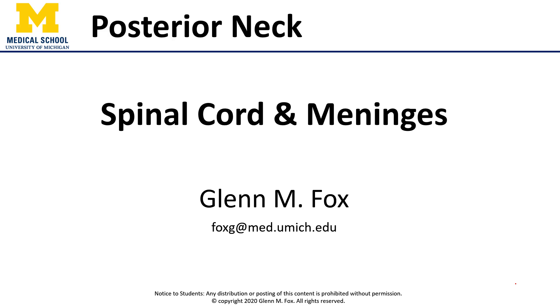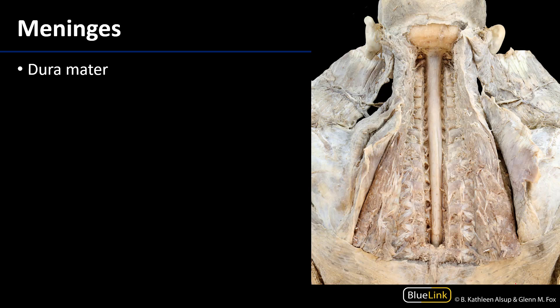Hello everyone, let's talk about the spinal cord and the spinal meninges. What you're looking at here is a posterior view of the neck and thorax on a donor on which a laminectomy has been performed. The laminae are the most posterior parts of the vertebral arch, and on either side these laminae have been sawed through so that we can expose the contents of the vertebral canal.